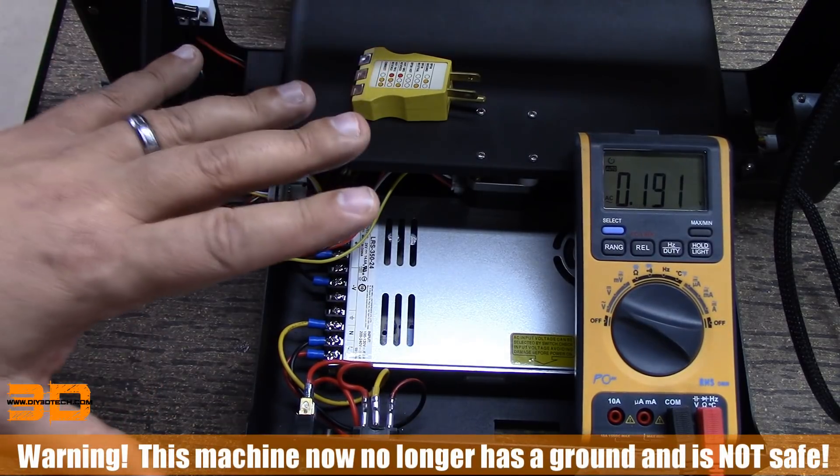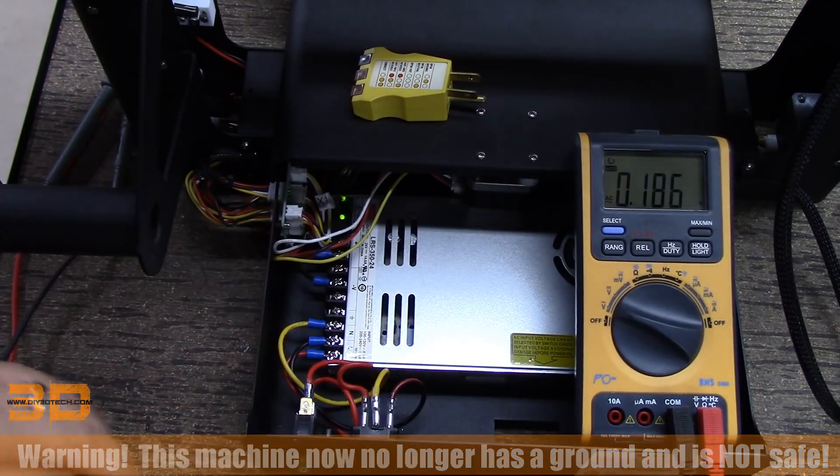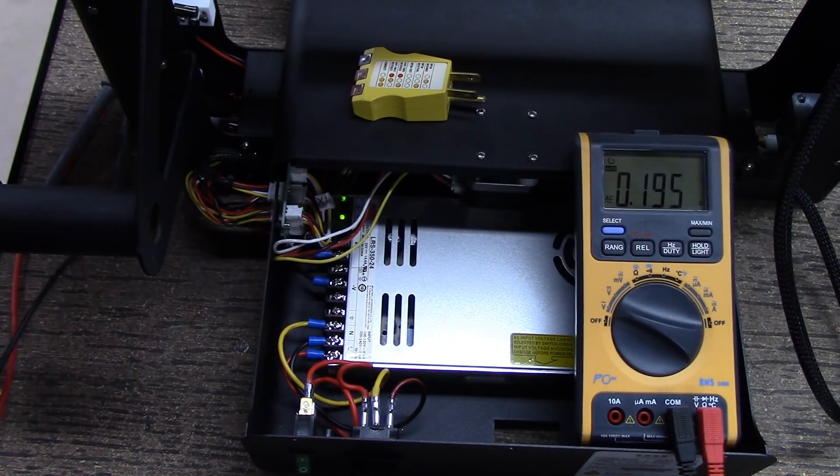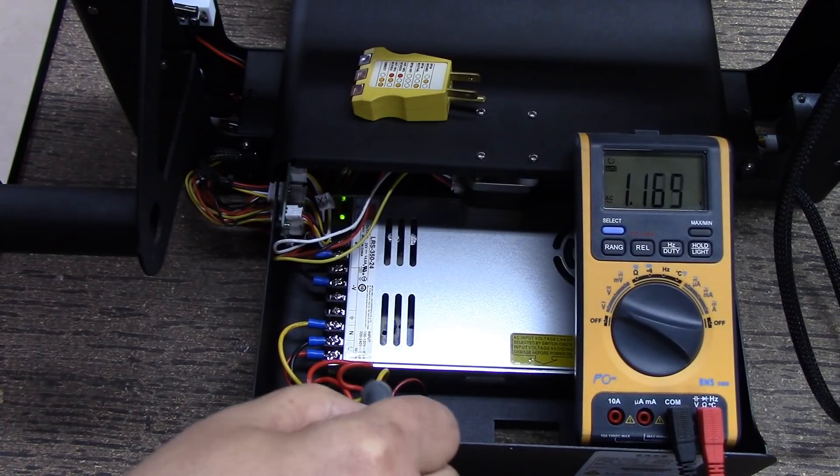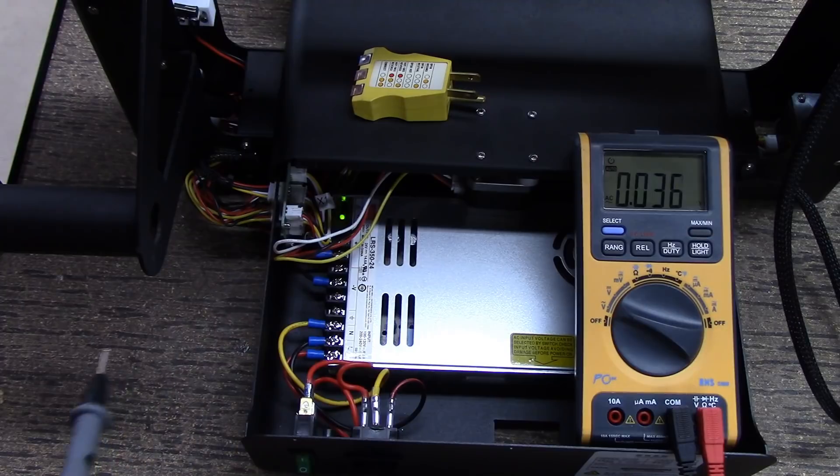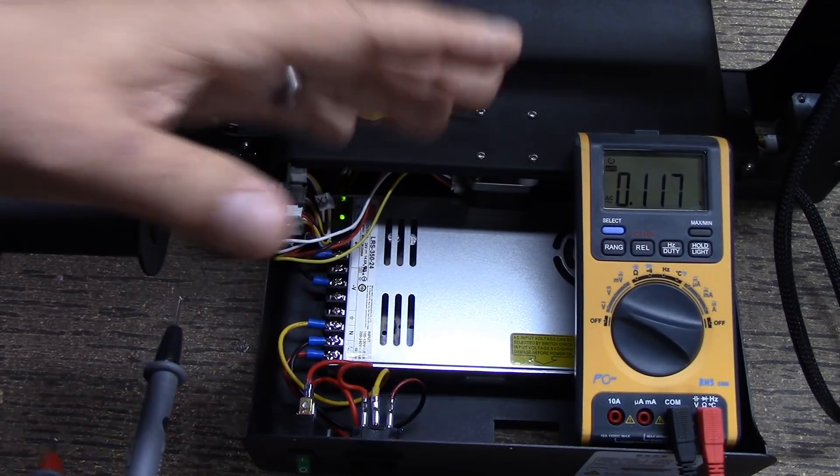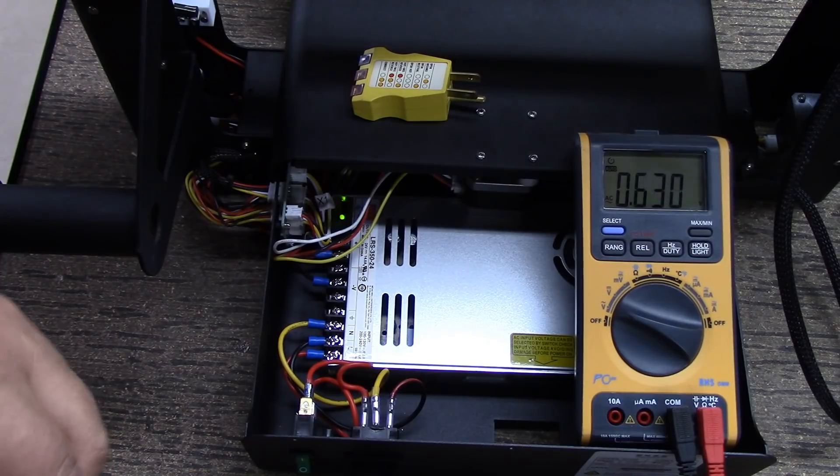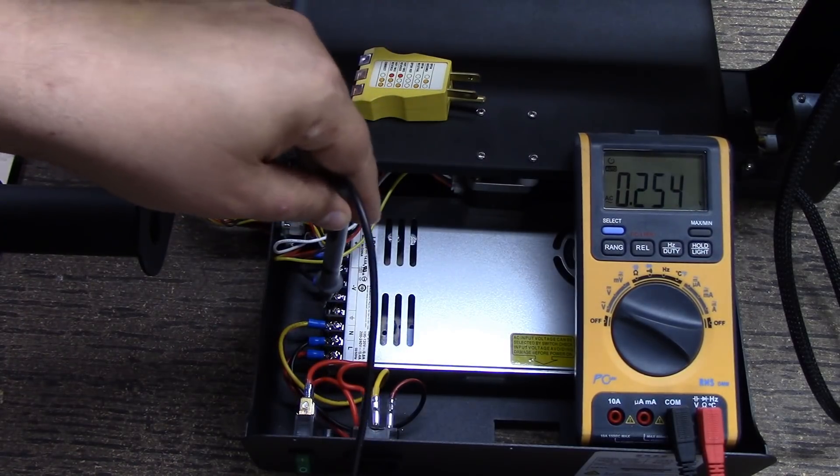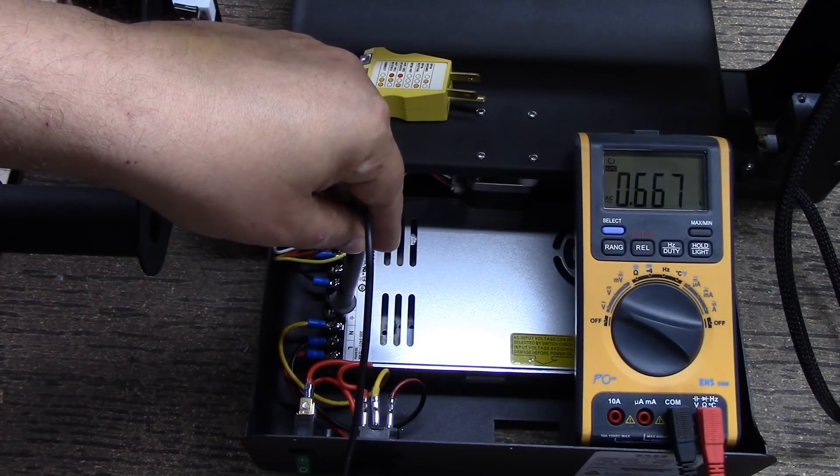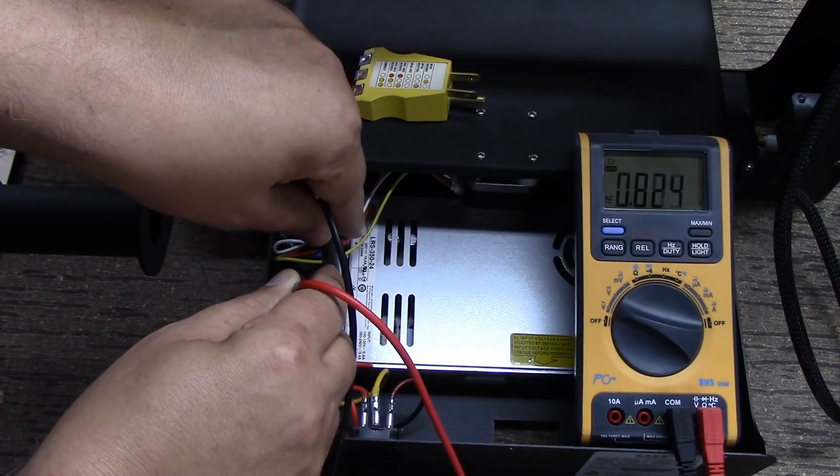In this configuration, I have no chassis ground. I simply, inside the case here, have my neutral and I have my hot running to the power supply. That means my ground is now floating. It's not connected to earth. What I'm going to do is I'm going to very carefully take my ground probe and I'm going to touch the ground on the power supply. Then I'm going to touch the neutral.